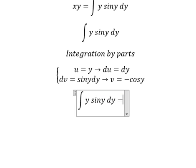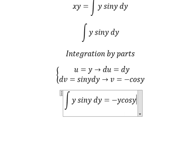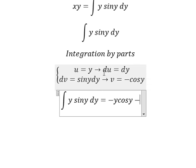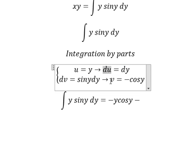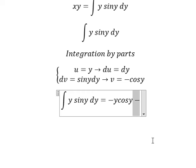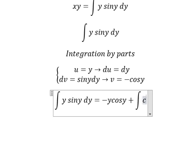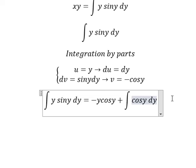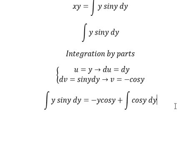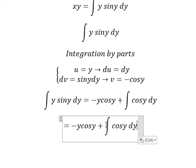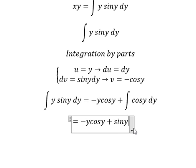So we have u multiplied by v. So we have negative y cosine y minus. We have du multiplied by v. So negative and negative, we have positive. And now we have the integration cosine y dy. So the integration of cosine y, we have sine y and I will put about C.